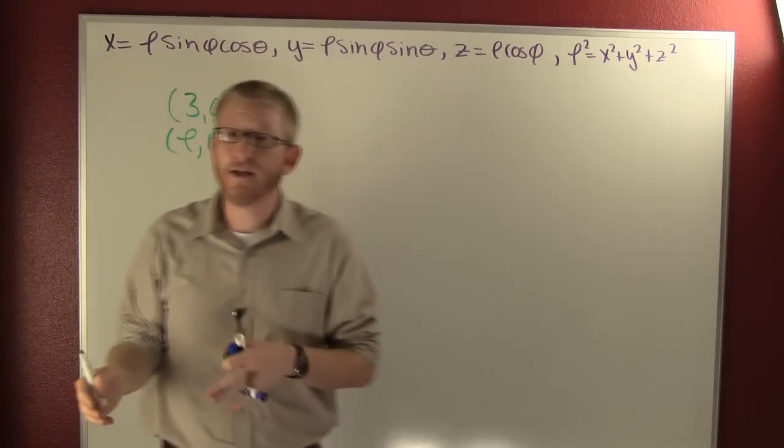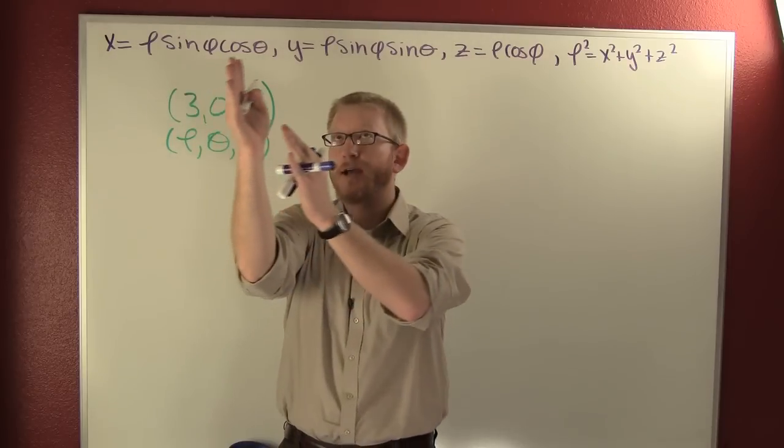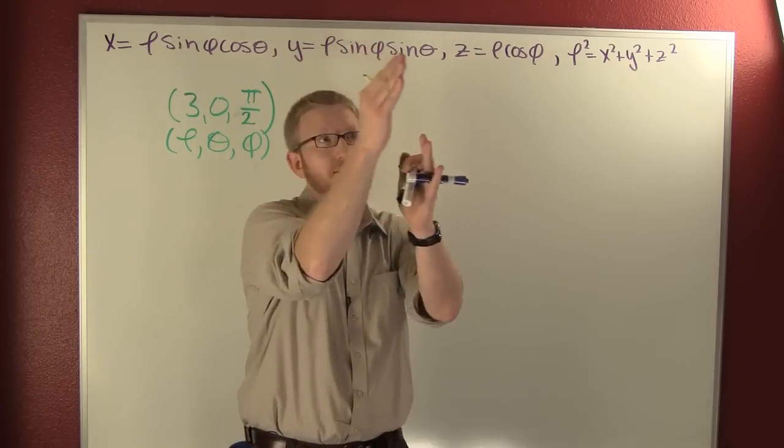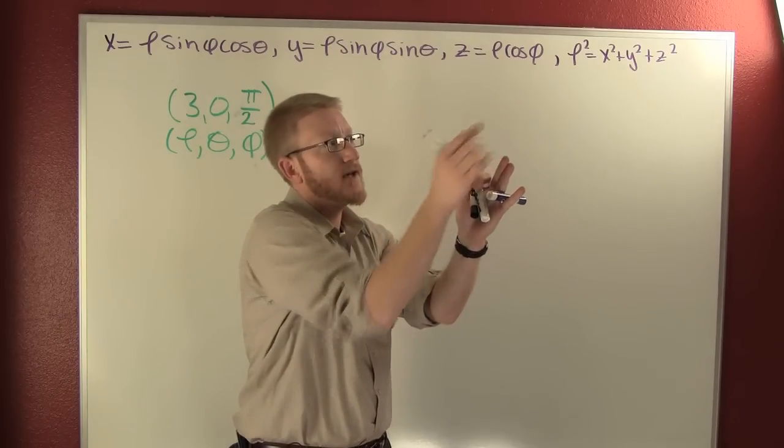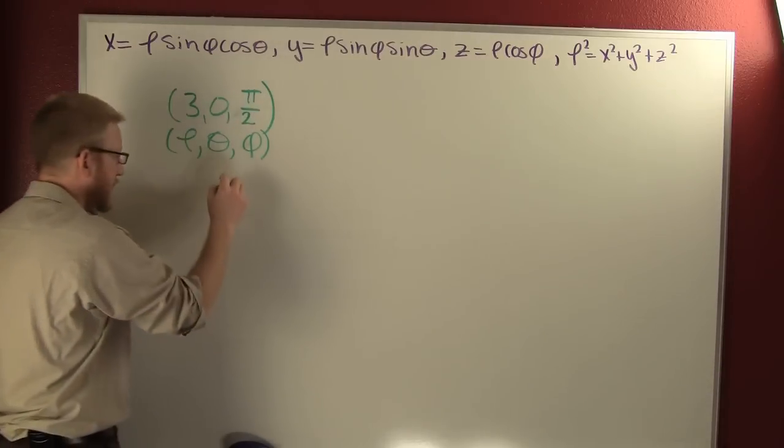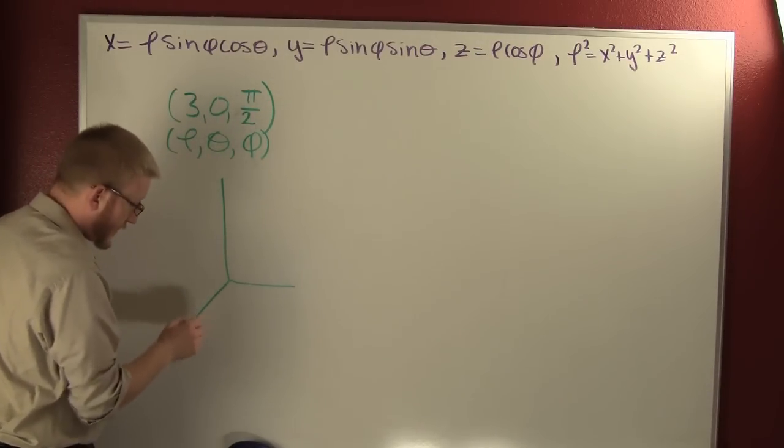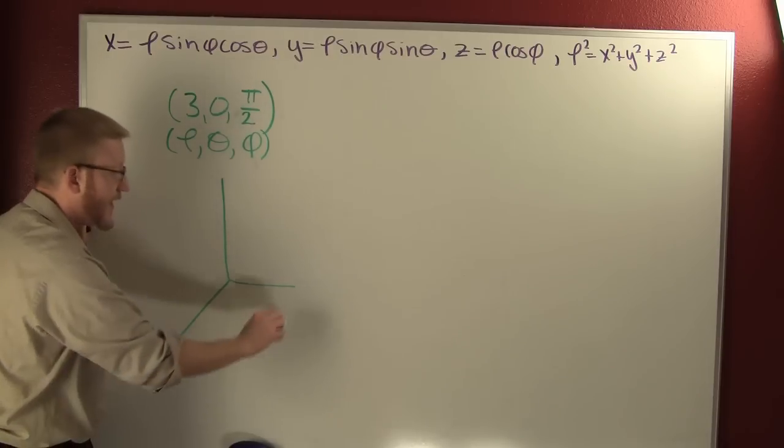You come down rho, track that pigeon over theta, and then shoot out phi. If I was going to graph this one, my theta is my rotation from my x, my phi is my rotation from my positive z, so we go down pi over 2. How far is that?